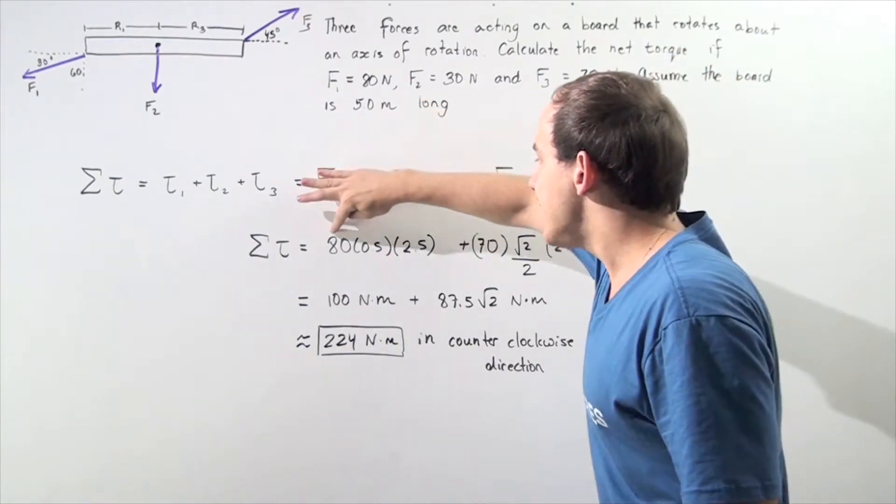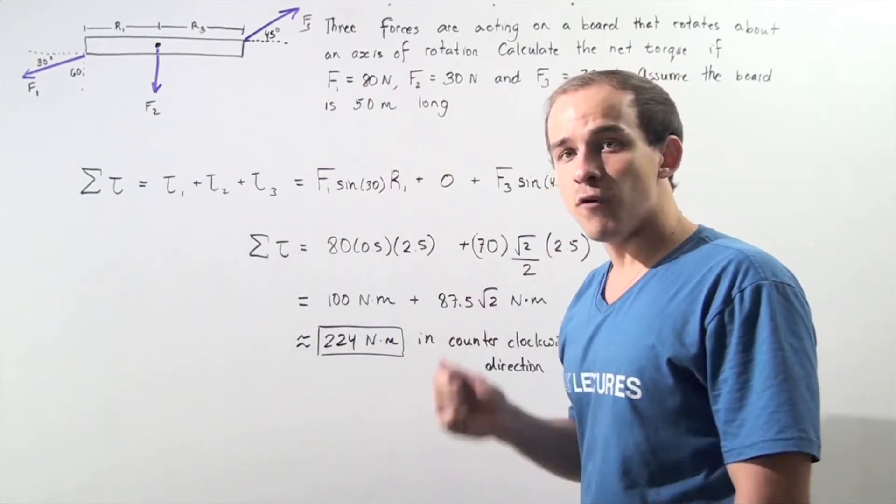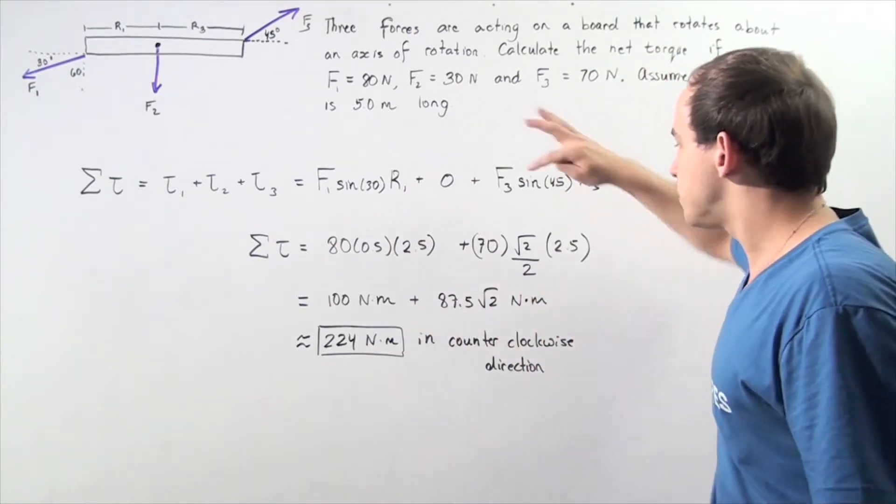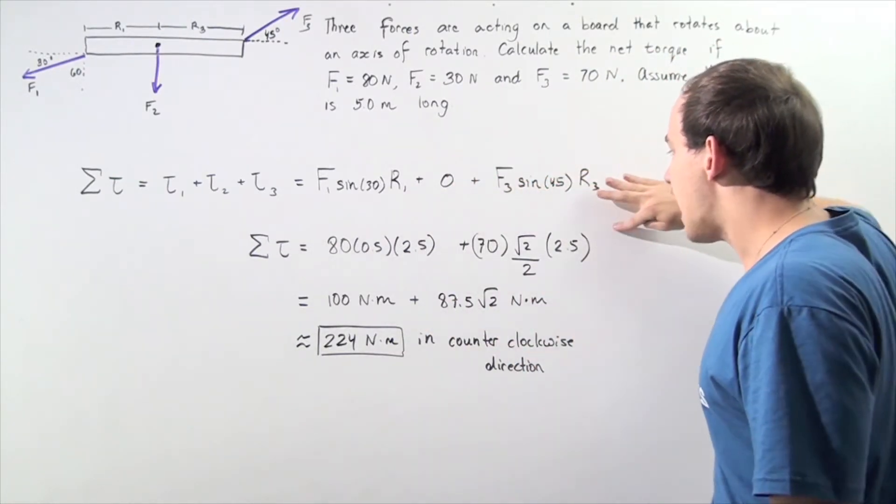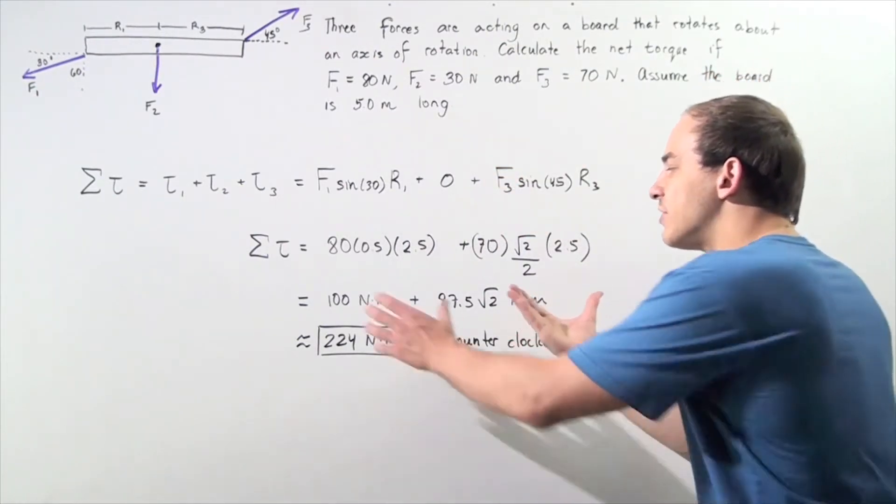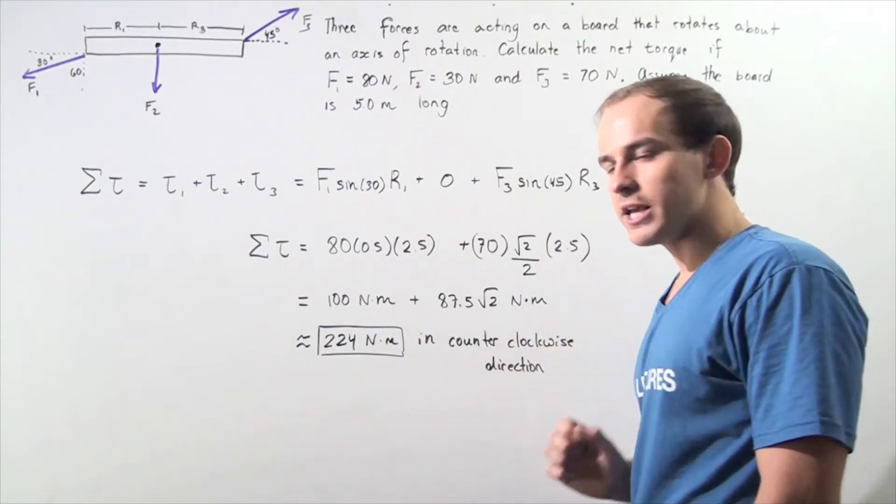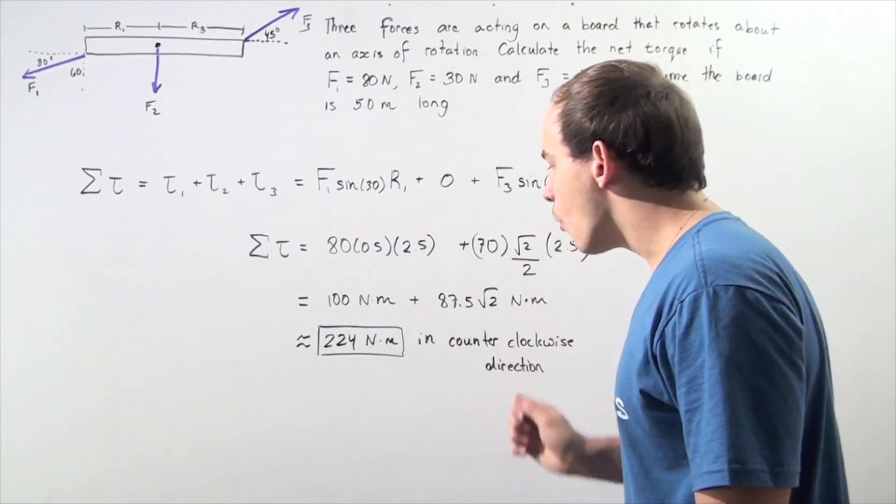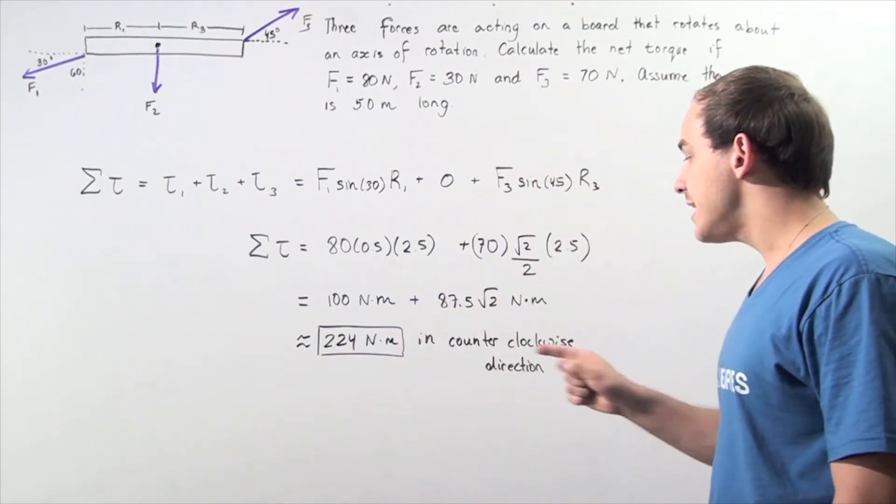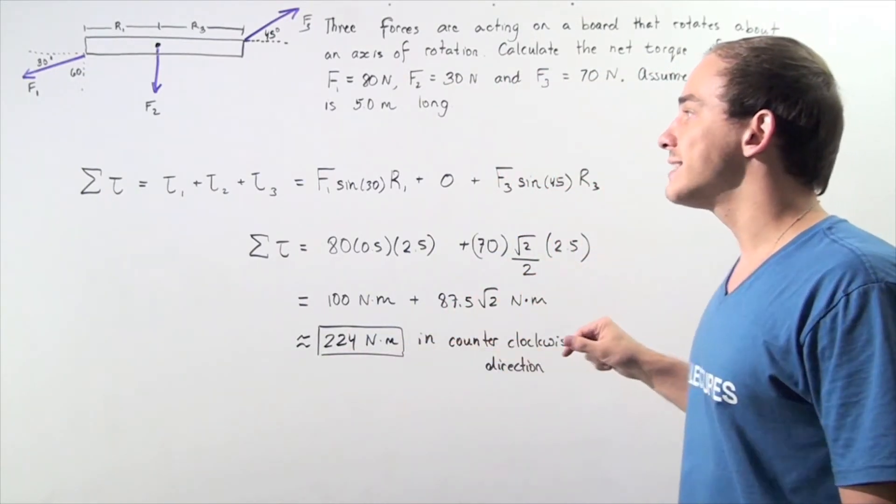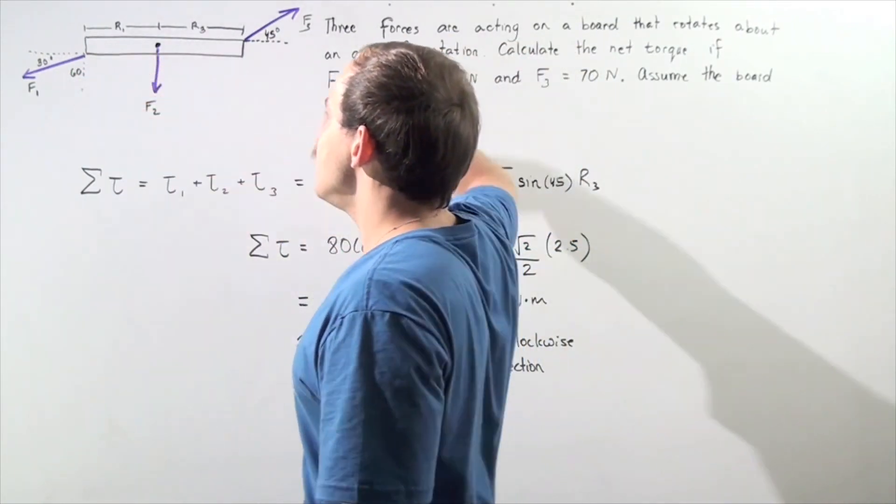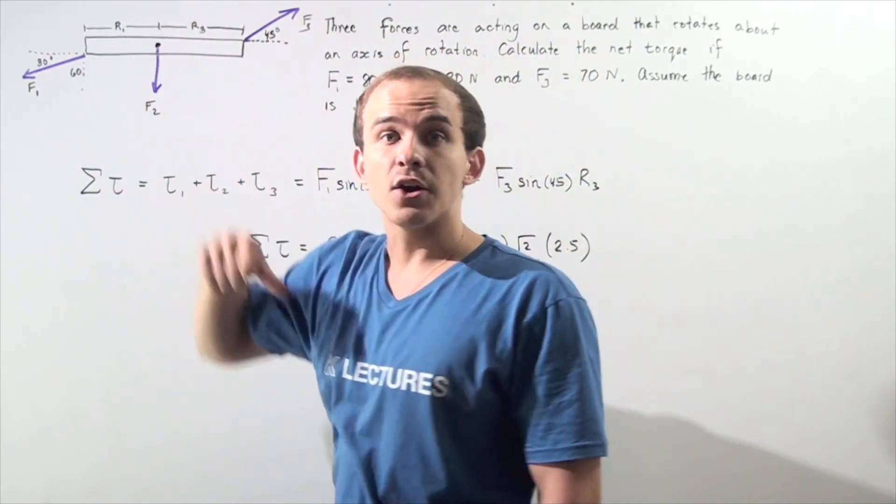80 times 0.5 is 40 times 2.5 is 100. We multiply 70 by 2.5, multiply that by radical 2, and divide by 2. We add these two values, and we get approximately 224 newtons times meters. And our direction is counterclockwise in the positive direction. So our board will rotate in the counterclockwise direction.